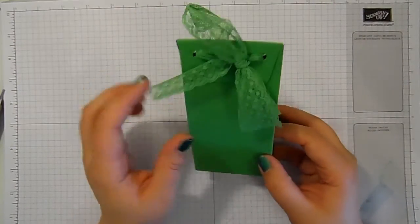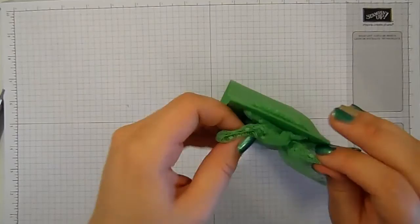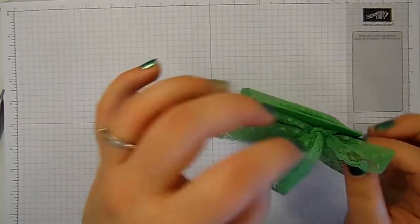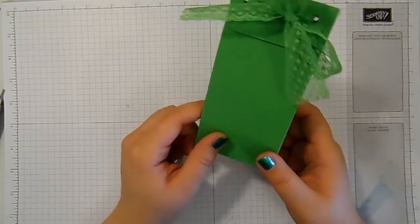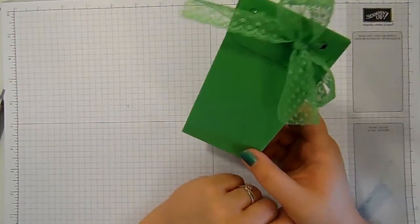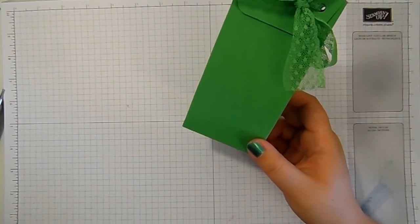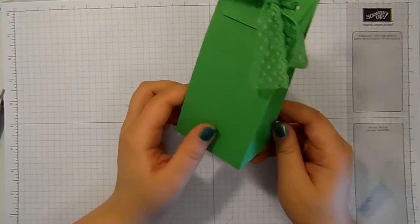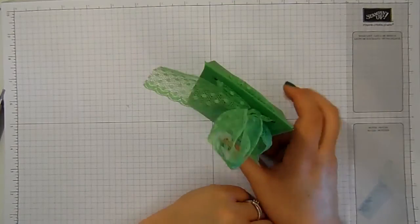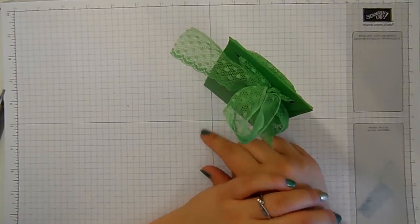There we have it. That is my, oh I will tidy that bow up for the pictures. As soon as I turn the camera off I'll be able to tie that bow beautifully but it's a bit of a mess isn't it. So that is my gift bag with flat lid using the gift bag punch board from Stampin' Up. Thank you very much for watching and I'll see you again next time. Bye for now.